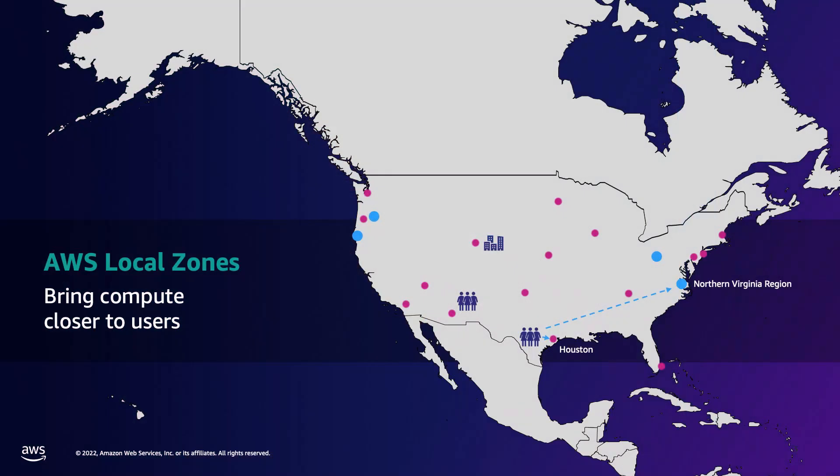The short answer is customers told us that they need it. If you look at AWS regions today, they cover a large global footprint, and for most use cases, regions meet the needs. However, for some applications that are latency-sensitive or sensitive to the physical location of the data, Local Zones come into picture. For example, a lot of customers want to serve their end users in Houston with single-digit millisecond latency, but the nearest region is North Virginia, which is 80 milliseconds away. With the introduction of the Houston Local Zone, customers can serve their end users with single-millisecond latency in the Houston metro area, providing a much better experience.